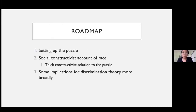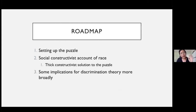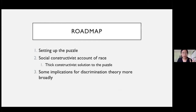Here is the roadmap for today's talk. I'm going to set up the puzzle, then pursue a solution — not by elaborating a distinctive account of discrimination, but rather a distinctive social constructivist account of race. I'm going to especially talk about a subset of social constructivism which I'll call thick constructivism, show how that offers a solution to the puzzle, and then talk about some implications for discrimination theory more broadly.